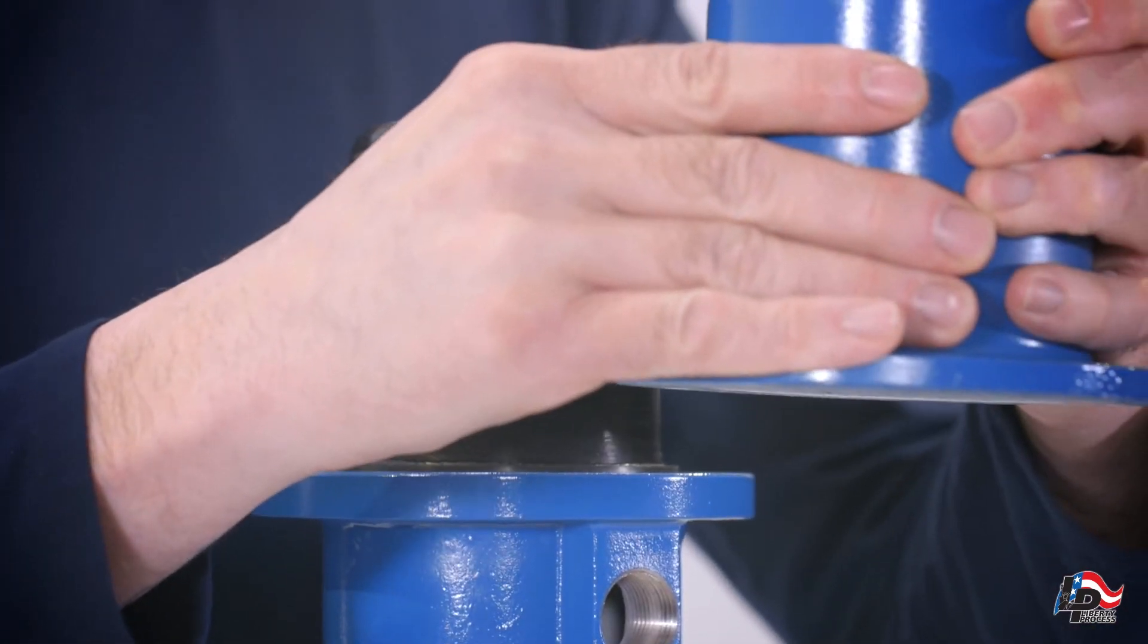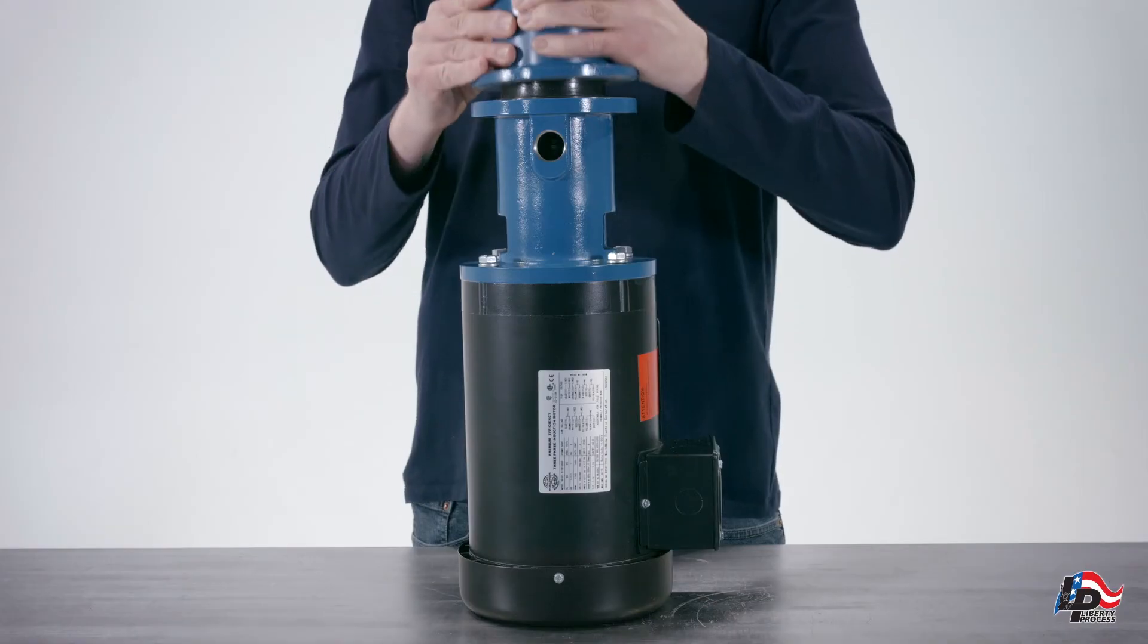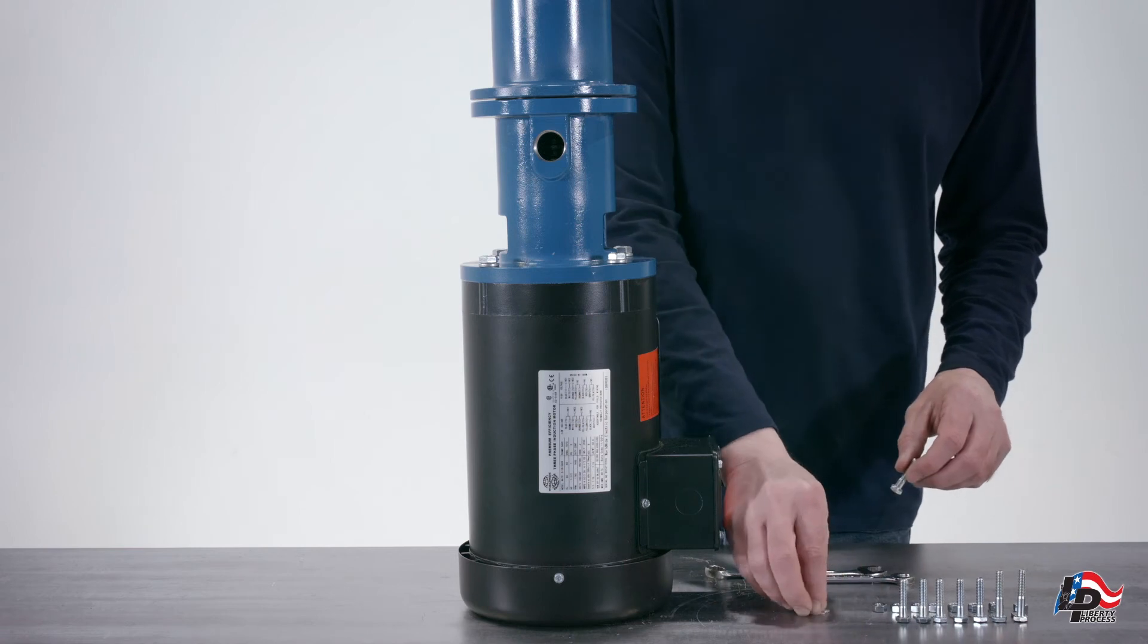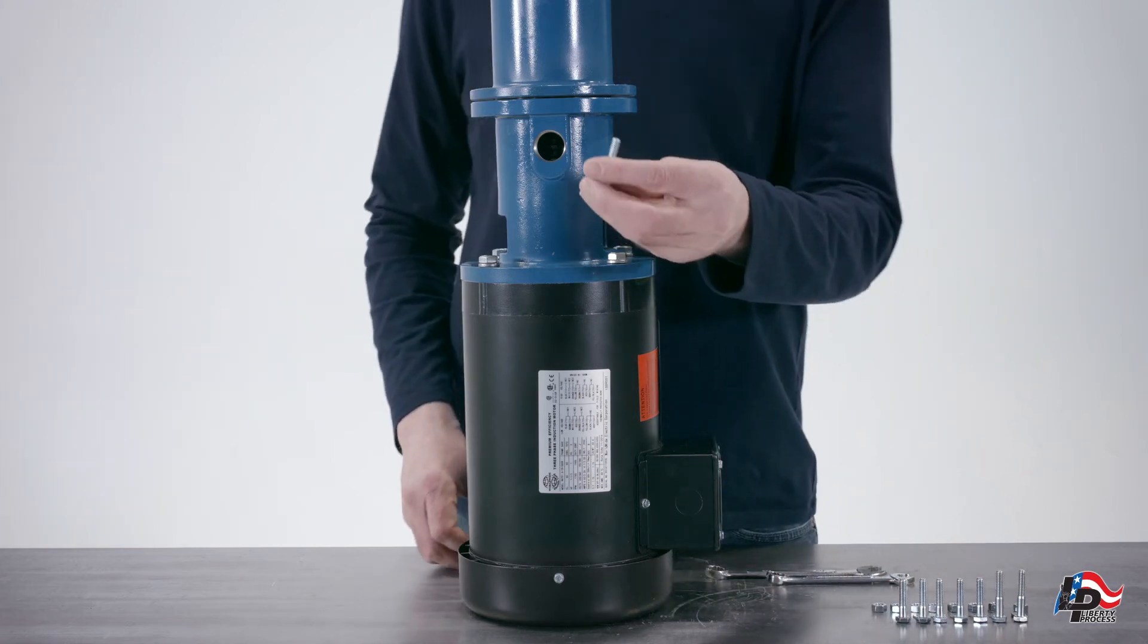Install the suction casing onto the pump assembly. Bolt the suction casing down using the 7-16-inch bolts, saving the two largest bolts for the foot assembly.